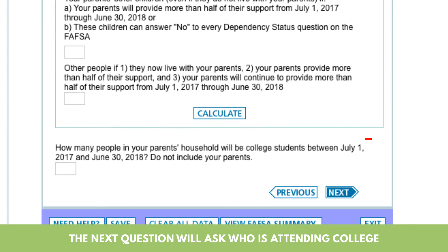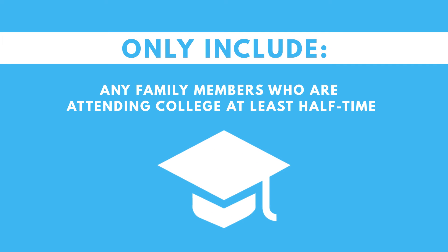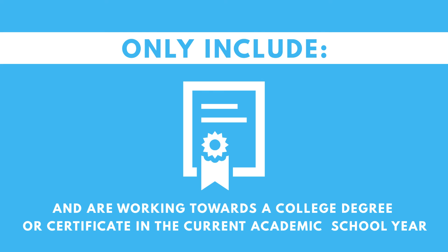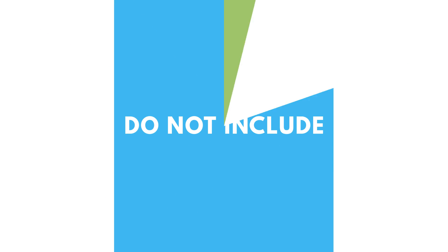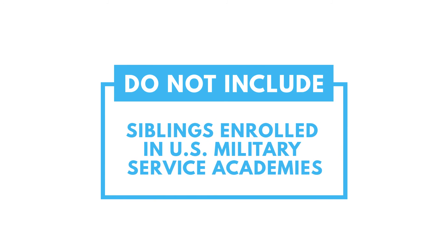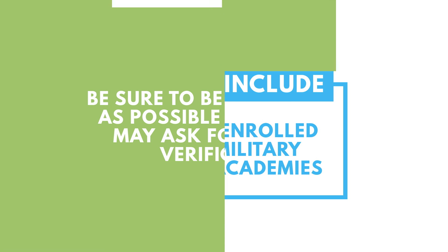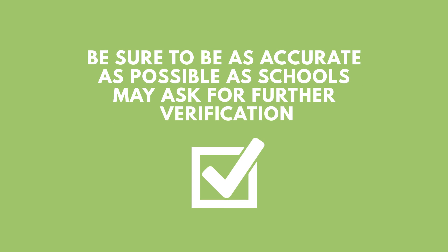The next question will ask who is attending college. Only include any family members who are attending college at least half time and are working towards a college degree or certificate in the current academic school year. Include yourself, but do not include your parents even if they are attending college. Do not include siblings enrolled in U.S. military service academies. Be sure to be as accurate as possible, as schools may ask for further verification.